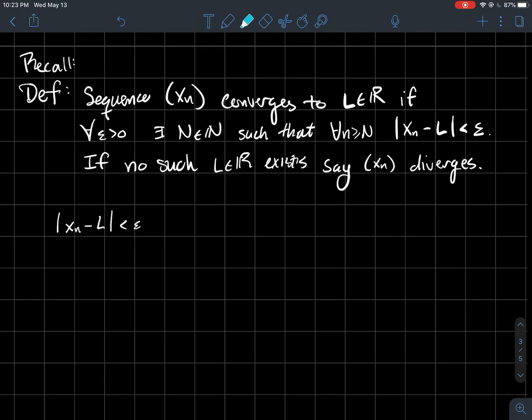Let me parse out what this absolute value means. The distance between a point in your sequence x_n and L is less than epsilon. From college algebra, this is equivalent to saying x_n minus L is between minus epsilon and epsilon.